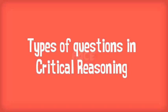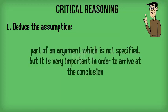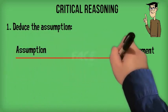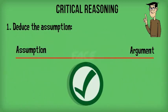Let us look at the major question types in critical reasoning. First: Deduce the assumption. We know that assumption is the part of an argument which is not specified, but it is very important in order to arrive at the conclusion. It should be in the same line of reasoning as that of the argument, thus helping to prove the conclusion right.